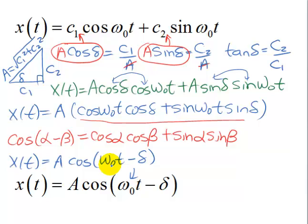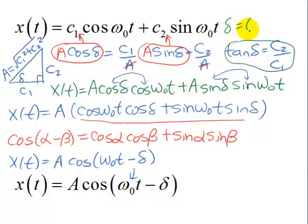Now how do we get at delta? We had tangent delta is C2 over C1, so delta is inverse tangent of C2 over C1. But we want to be careful that we get this in the correct quadrant. Remember inverse tangent is restricted. Our best bet is to draw a little sketch so we can put the triangle in the quadrant where it should be to give us the correct angle. Let's see an example.